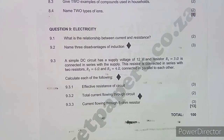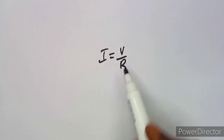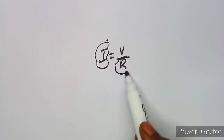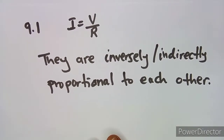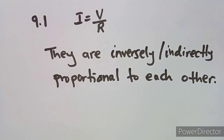We're on Question 9, which is on electricity. Question 9.1 asks: what is the relationship between current and resistance? We know that current is equivalent to voltage over resistance — I equals V over R — so current and resistance are inversely proportional, or indirectly proportional, to each other. That is the relationship you can state.